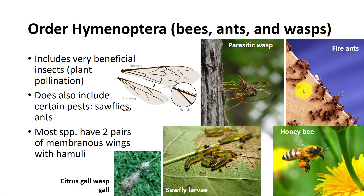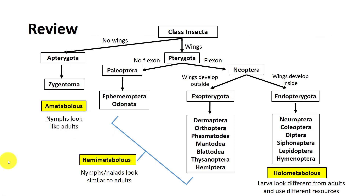Ants are common pests around homes. Those of you in the southeastern U.S. are familiar with fire ants. These were accidentally introduced into the U.S. in the 1930s and have been quite successful. An interesting fact about hymenopterans is that females develop from fertilized eggs and males develop from unfertilized eggs. In review, the insect orders are grouped according to whether or not they are ametabolous, hemimetabolous, or holometabolous. You will also see that the insect orders are grouped according to the absence or presence of wings and whether or not the wing has a flexion point.